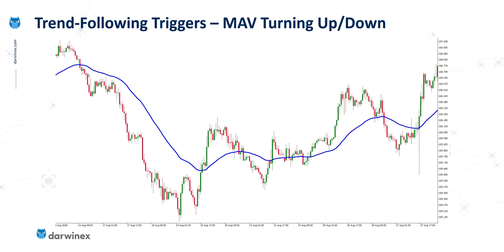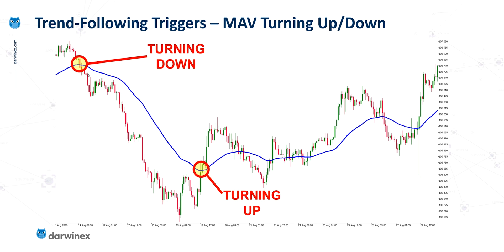I also started to allude to some of the issues that trend-following indicators exhibit when used in this way, and it's these issues that we're going to look at in a little bit more detail in today's episode. We'll also consider potential solutions, or at least ways that we can reduce the damaging effect of them. The first method was a turning point in the moving average — here the moving average turns down, and here it turns up — and we could use these to inform trade entry and trade exit. This is an example of the happy path where the indicator appears to work very well. But take a closer look at the chart on the right-hand side: each of the circles here identifies another turning point, and each of these represents a much more concerning situation, because they obviously wouldn't give you the desired outcome.